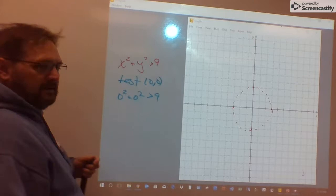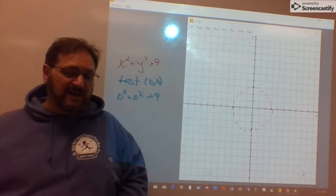Is this true or is it false? Left side is 0, right side is 9, 0 greater than 9, that's clearly false.